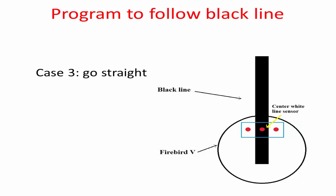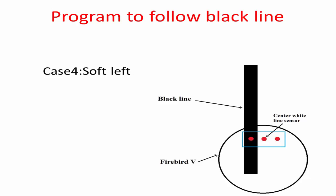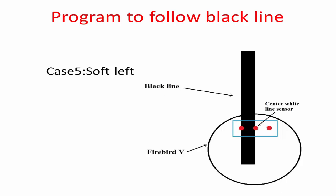Case 3: when the black line is below the second line sensor, the robot should be made to go straight. Case 4: when the black line is below the first line sensor, the robot should be made to turn soft left. Case 5: when the black line is below the first and second line sensors, the robot should be made to turn soft left.